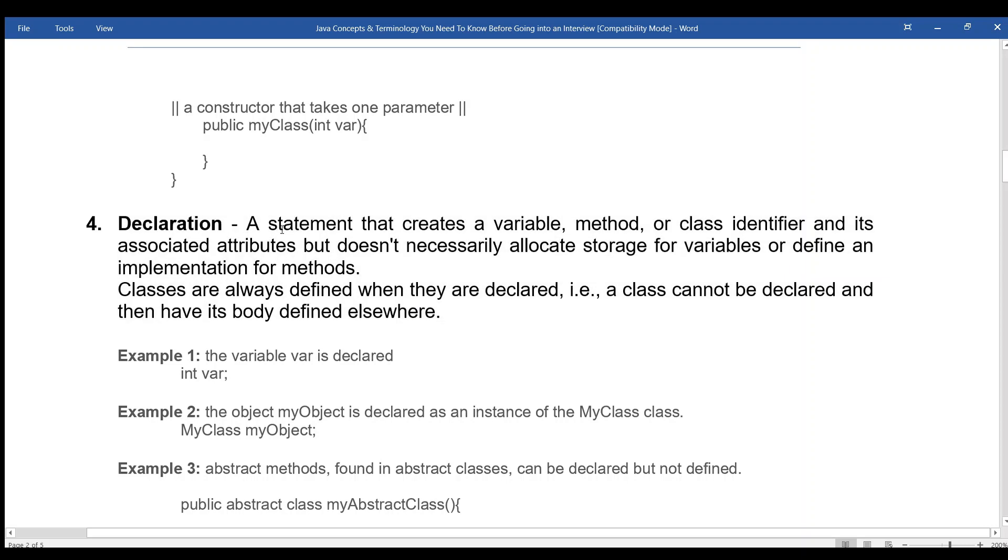Declaration: A statement that creates a variable, method, or class identifier and its associated attributes, but doesn't necessarily allocate storage for variables or define an implementation for methods. Classes are always defined when they are declared. A class cannot be declared and then have its body defined elsewhere.